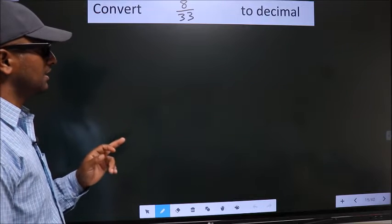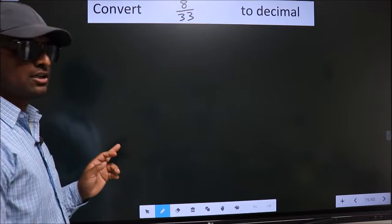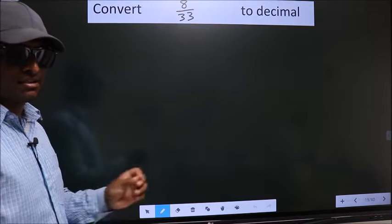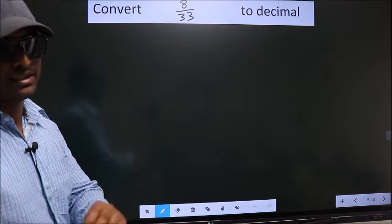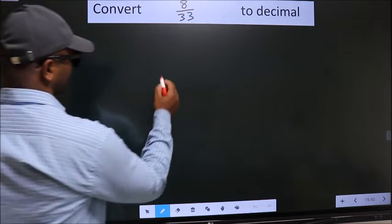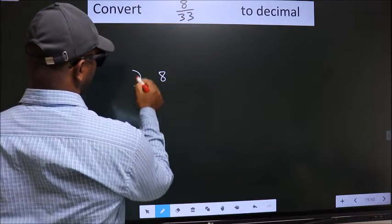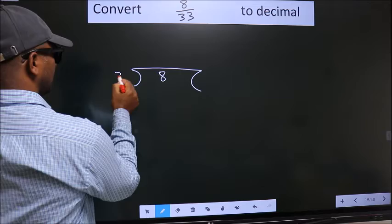Convert 8 by 33 to decimal. To convert this to decimal, we have to divide. To divide, we should frame it in this way: 8 here, 33 here.